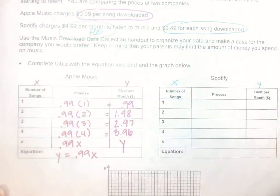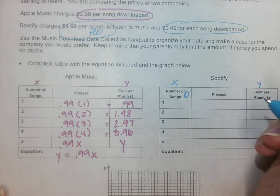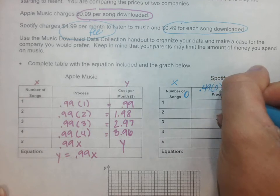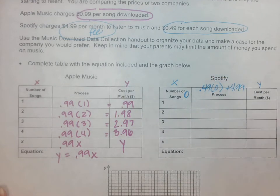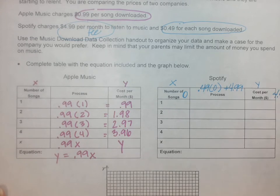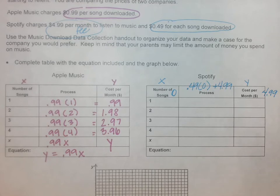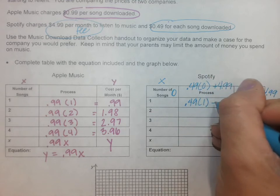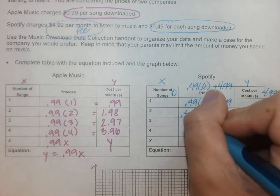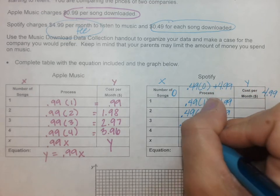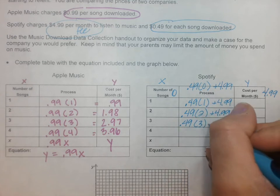I know at zero songs, it's 49 cents times zero, but look, I got that $4.99 fee. So at zero songs, I don't download anything, Spotify still charges me a monthly fee. One song would be 49 cents times one song plus the $4.99. 49 cents times two songs plus the $4.99, and this keeps going.